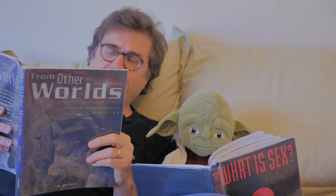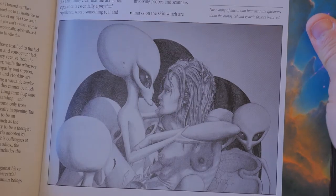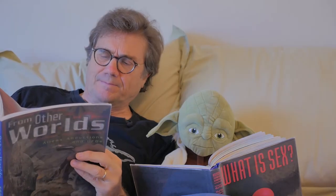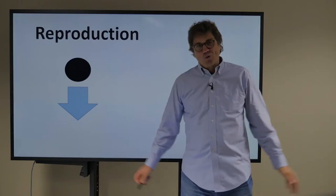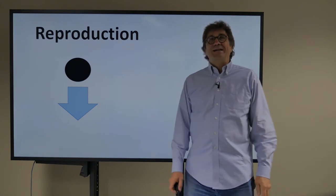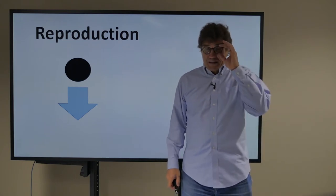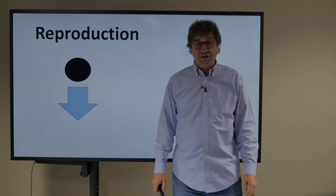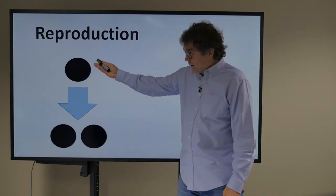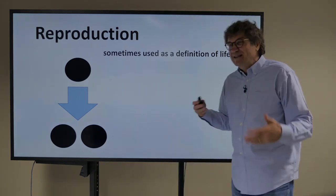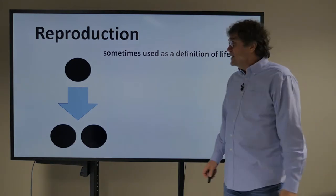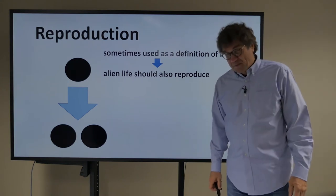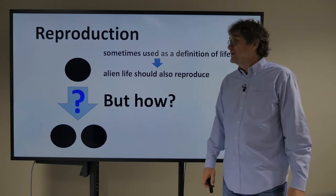Hey Yoda, do you have a girlfriend? I'm just trying to figure out how aliens reproduce. I guess you're trying to figure that out too. Reproduction — it's one of the most fundamental features of life on Earth. Sometimes it's so fundamental we use it as the definition of life itself. One black blob turns into two black blobs. So if it's that fundamental, maybe alien life should also reproduce. But how do they do that? How does alien life reproduce?